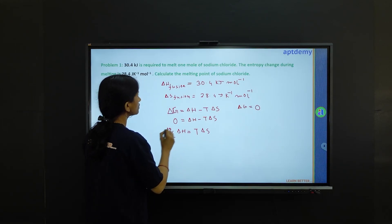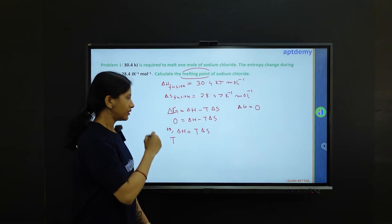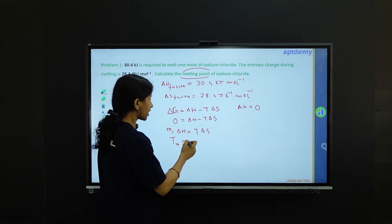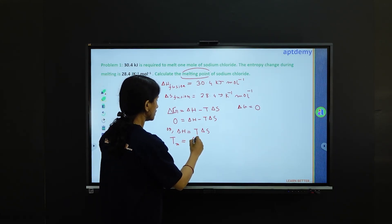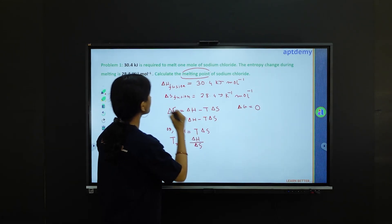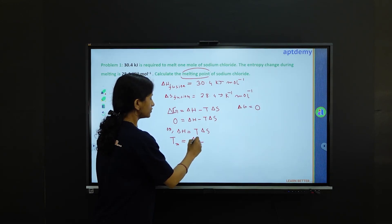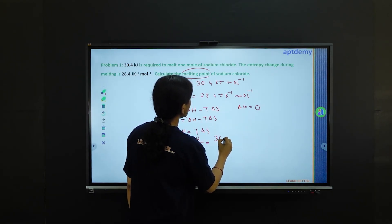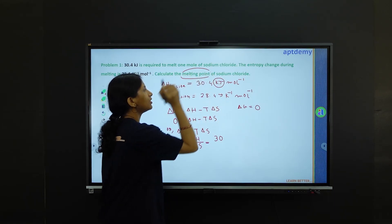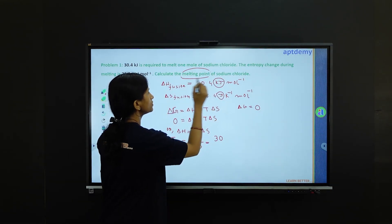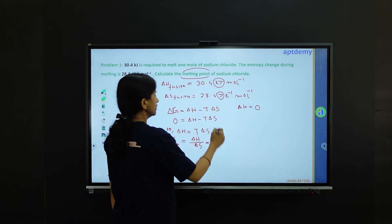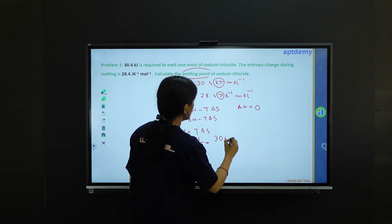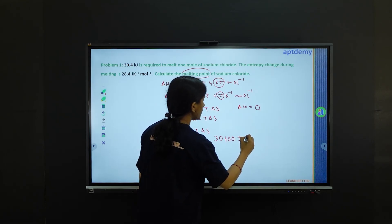We have to calculate the melting point, which is a temperature. We can write this temperature as Tm. So Tm is equal to delta H divided by delta S. Now we have the values given, so we just put them in. Delta H is given in kilojoule and delta S is in joule, so we need to convert. Let us convert delta H to joule per mole, which gives 30400 joule per mole.